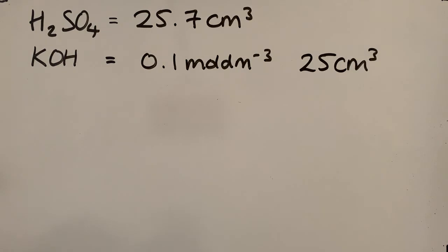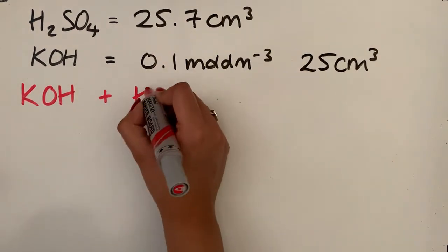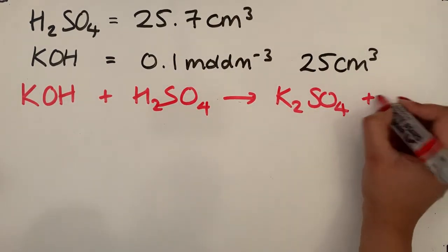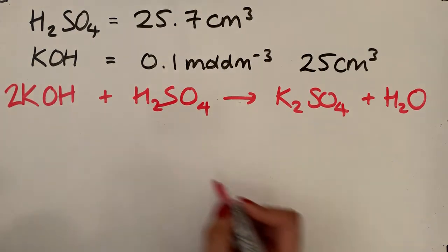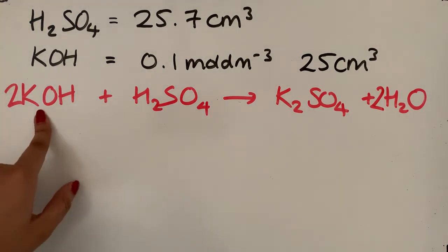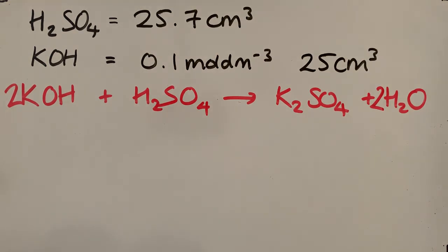The place where you should always start is a balanced equation. This is a neutralization reaction: potassium hydroxide plus sulfuric acid gives potassium sulfate (the salt) plus water. Once balanced, the equation shows us that two moles of potassium hydroxide react with one mole of sulfuric acid. That molar ratio is very important for the subsequent calculations.